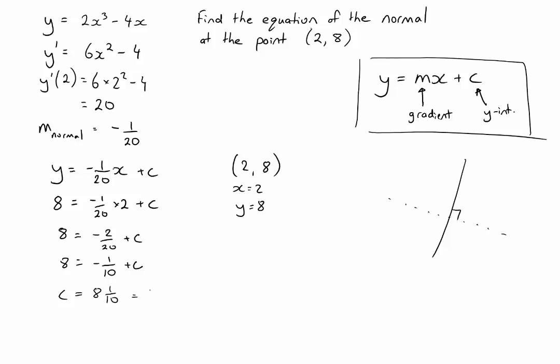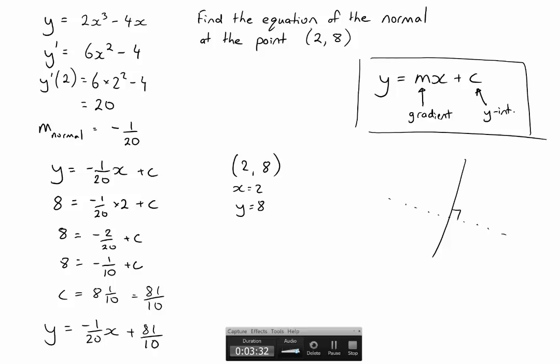Now we have the second part of our equation, which gives us our final answer. I'll put it down at the bottom: y equals negative 1/20x plus 81/10. And there you have it.